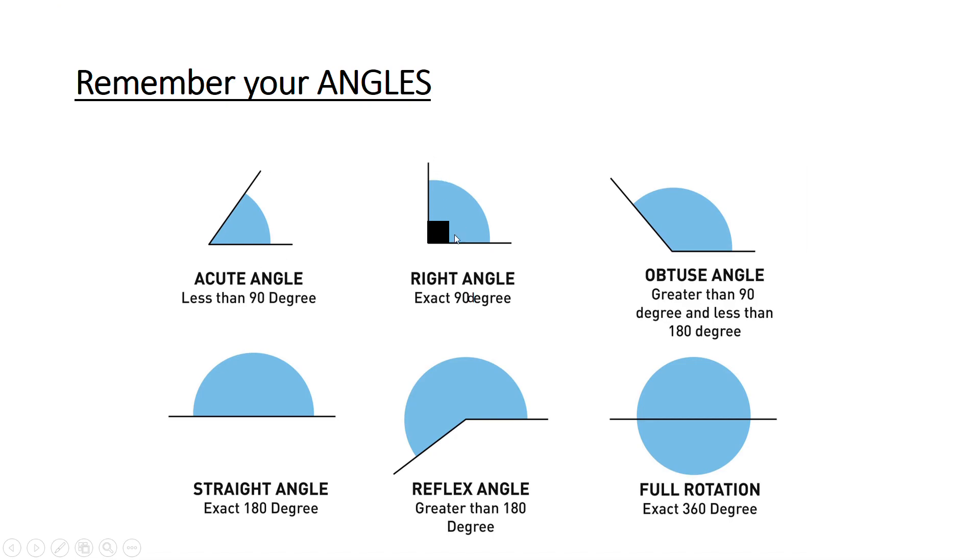The one that's exactly 90 degrees, which is shown by a box by the angle, which is equal to 90, that's called a right angle. You've got your obtuse angle, which is bigger than 90, but less than your straight line, which is 180 degrees.